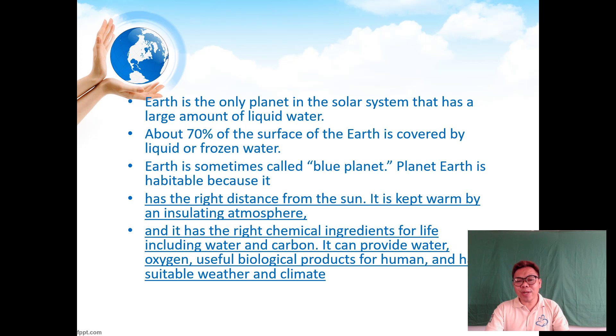Earth is the only planet in the solar system that has a large amount of liquid water. 70% of the surface is covered by water or frozen water in the form of glaciers. That's why if you take a picture from outside our planet, Earth is sometimes called a blue planet.